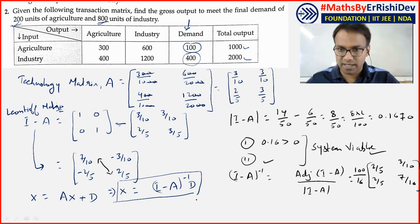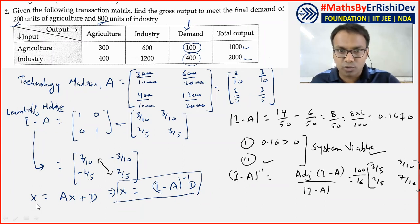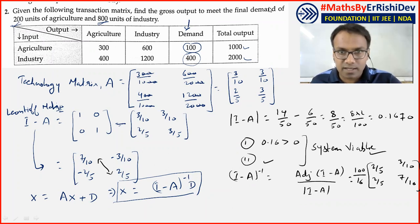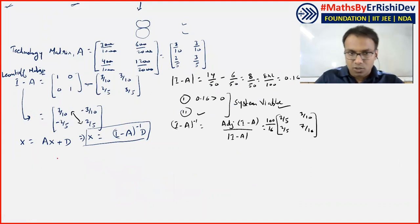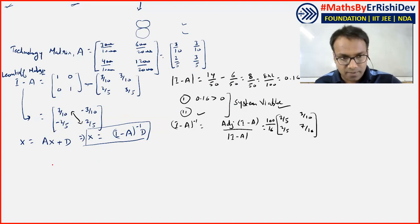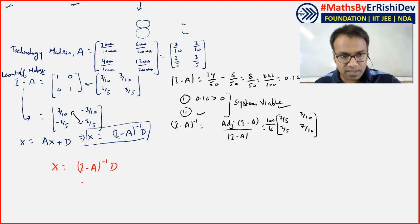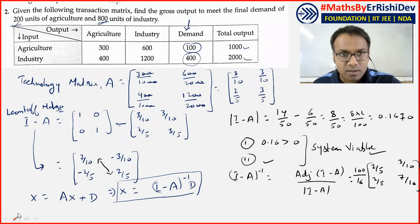Moving to the next page for calculations. X equals (I-A) inverse times D. We have calculated the inverse; now multiply by D. D is 200 and 800 — that is what is required. So the column matrix D is 200 and 800.